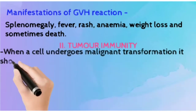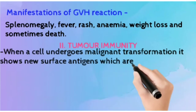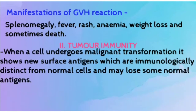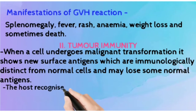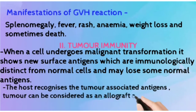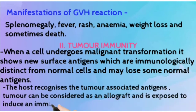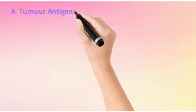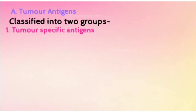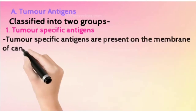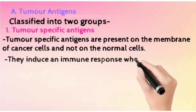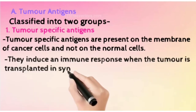Tumor immunity: when a cell undergoes malignant transformation, it shows new surface antigens that are immunologically distinct from normal cells. The host recognizes these tumor-associated antigens, and the tumor can be considered as an allograft that induces an immune response. Tumor antigens are classified in two groups. First, tumor-specific antigens are present on the membrane of cancer cells but not in normal cells; they induce an immune response when the tumor is transplanted, and in animals these are termed tumor-specific transplantation antigens.